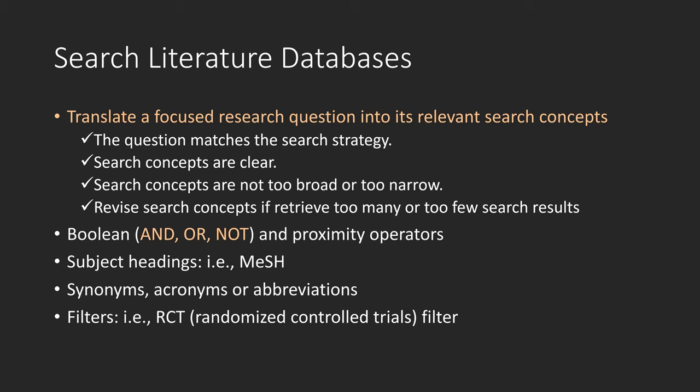When using Boolean and proximity operators, make sure syntax is correct and avoid mistakes. Search term harvesting is an important step. Consider using subject headings — a list of terms that describe the content of each item in a literature database. Searching by subject headings is the most precise way to locate articles. When using natural language or free text, consider synonyms, acronyms, or abbreviations that may have the same meaning as a term.